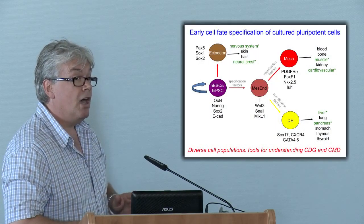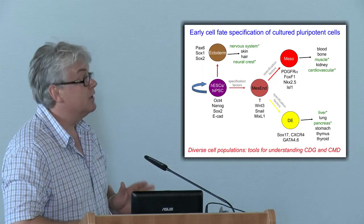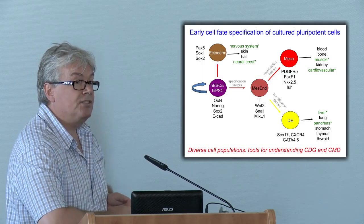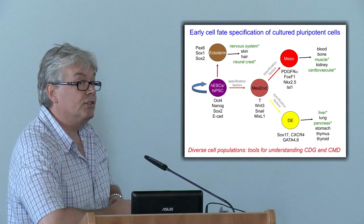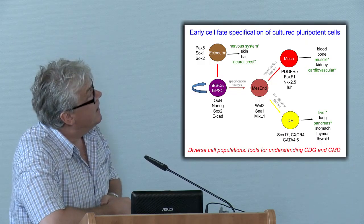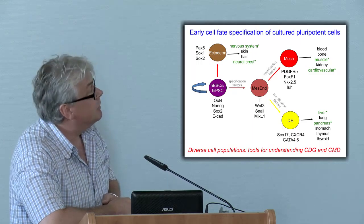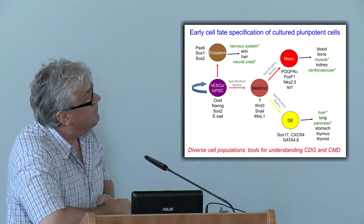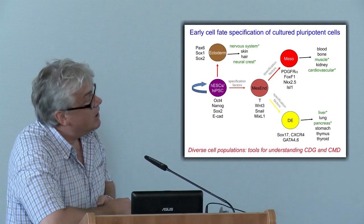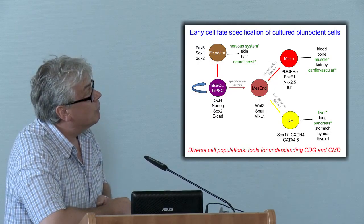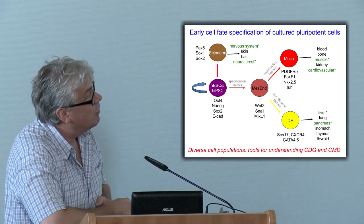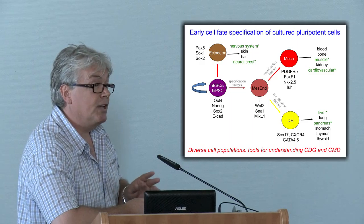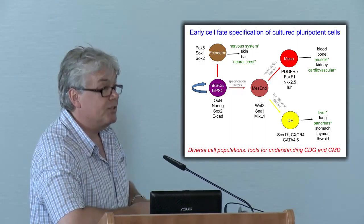Pluripotent cells are very powerful in terms of their developmental potential. In the laboratory we have access to two broad classes of pluripotent stem cells. There are embryonic stem cells that are derived from surplus IVF embryos from a human IVF clinic. These cells can be cultured in vitro in a culture dish in an incubator in the laboratory and retain essentially all of the properties that the stem cells of the blastocyst stage embryo exhibit.